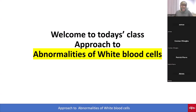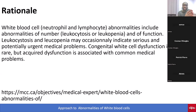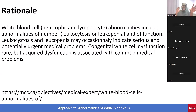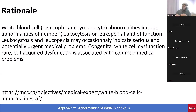Welcome to today's class on approach to white cell abnormalities. The rationale is that white cell abnormalities — neutrophils and lymphocytes — include abnormalities of number, such as leukocytosis or leukopenia, meaning excessive or decreased white cells, and abnormalities of function. Leukocytosis and leukopenia may occasionally indicate serious and potentially urgent medical problems. Congenital white cell dysfunction is rare, but acquired dysfunction is associated with common medical problems.